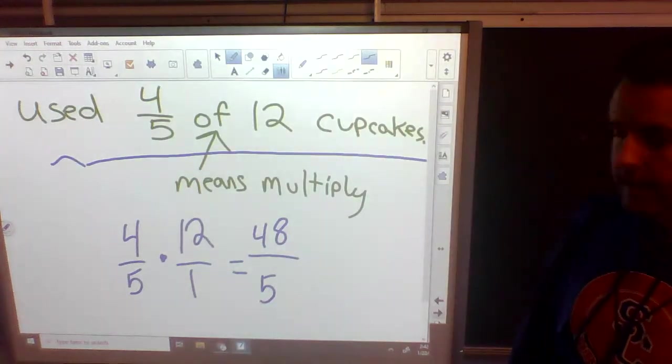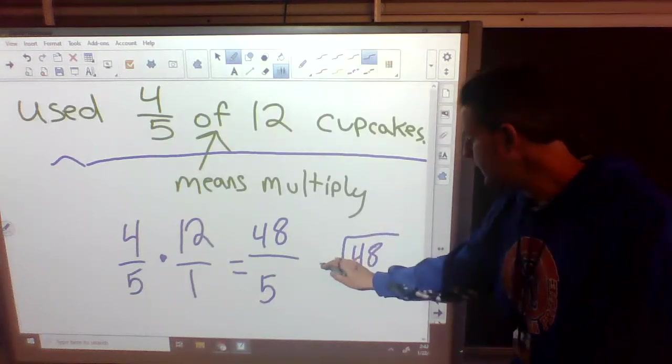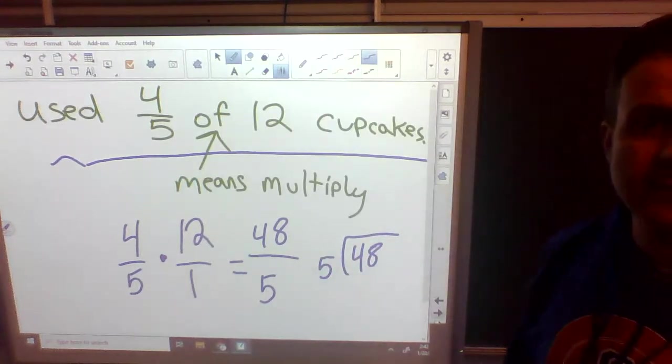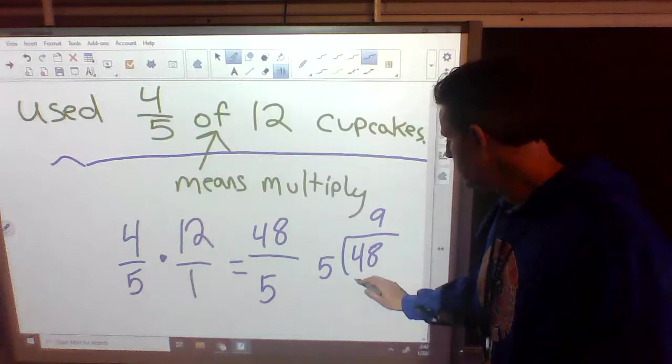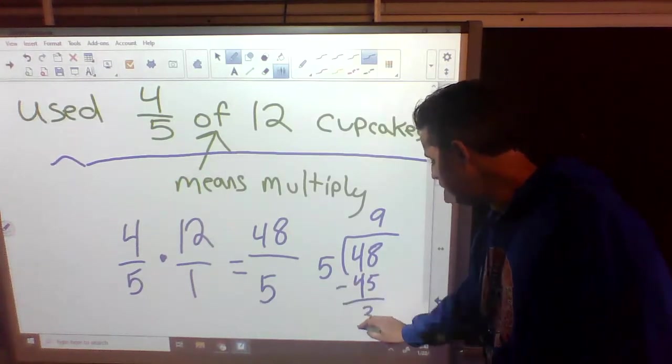What's wrong with 48 over 5? It's top-heavy. We need to do 48 divided by 5. How many times will 5 fit into 48? 9 times. 9 times 5 is 45.